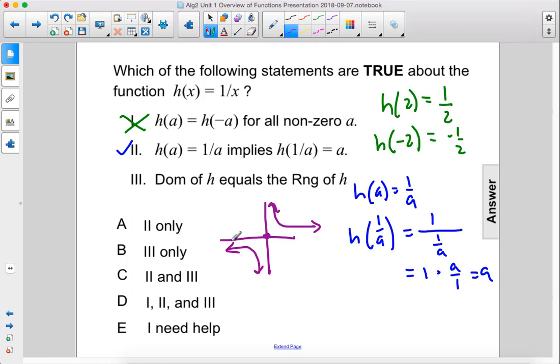And the domain is going to be the same. It's all real numbers except for 0. So the domain does equal the range, that is true. Therefore, the answer to this problem is C.